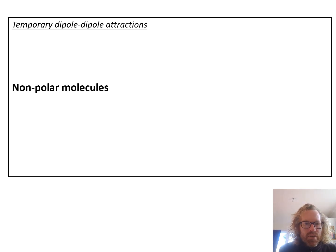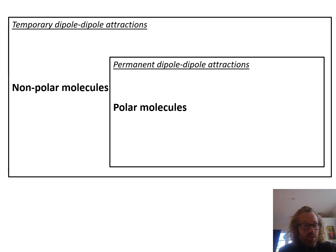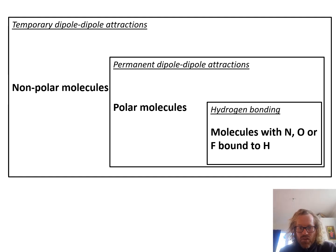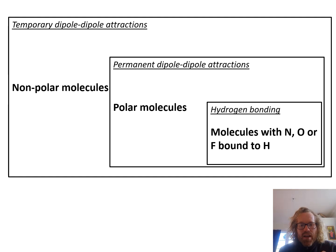So summarizing all the different types: non-polar molecules only have temporary dipole-dipole attractions. Polar molecules have temporary dipole-dipole attractions and permanent dipole-dipole attractions. And a subset of polar molecules have hydrogen bonding - those with nitrogen, oxygen, or fluorine bonded to hydrogen. If a molecule has hydrogen bonding, it also has permanent and temporary dipole-dipole attractions. If it's just polar, it has permanent and temporary dipole-dipole attractions. If it's non-polar, it only has temporary dipole-dipole attractions.